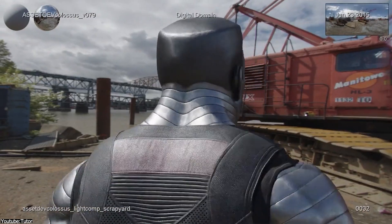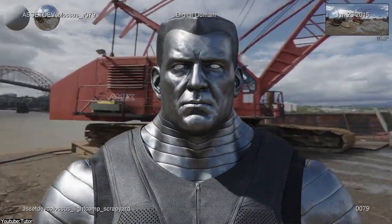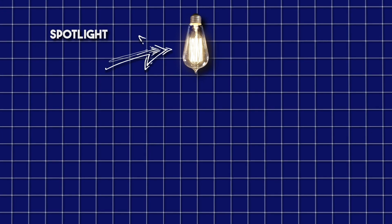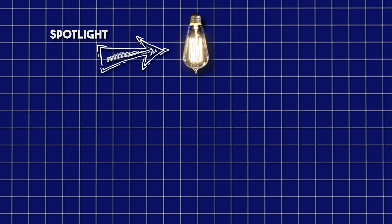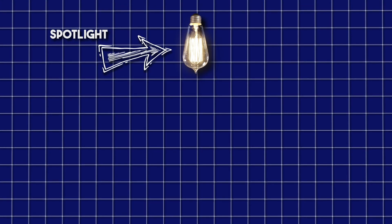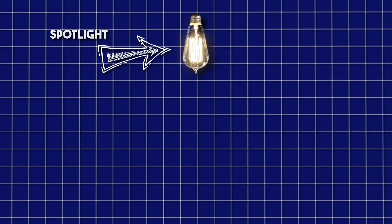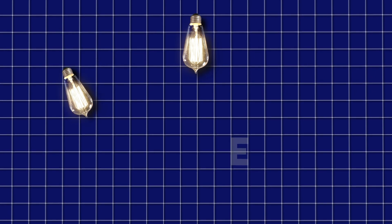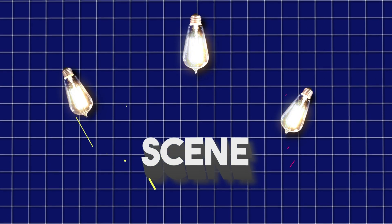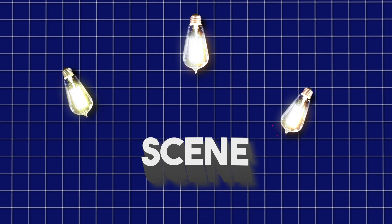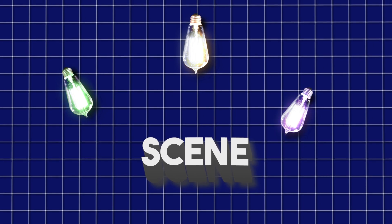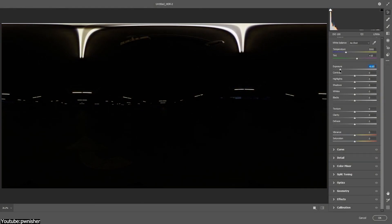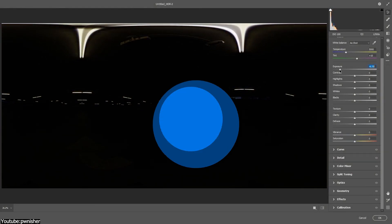Now that we have a general idea about HDRIs, how does it exactly work? First, we need to understand how traditional lighting works, which involves placing individual light sources within a scene and adjusting their brightness, color, and direction to achieve the desired lighting effect. This approach can produce realistic lighting, but it can also be time-consuming and hard to fine-tune.